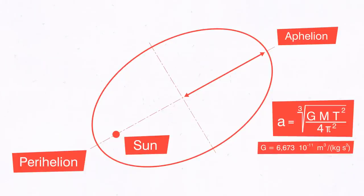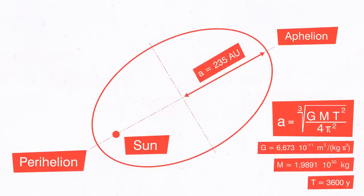The mass of the Sun M amounts to 1.9891 times 10 to the power of 30 kilograms, and as you might have guessed, T is the orbital period. This gives us the semi-major axis at 235 astronomical units, or 235 times the distance between Sun and Earth.